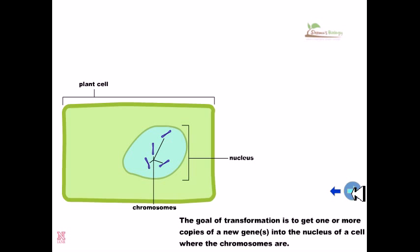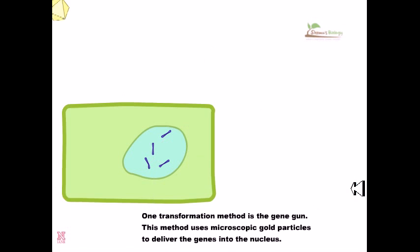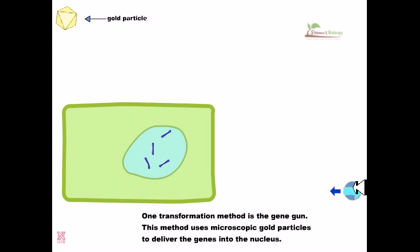The goal of transformation is to get one or more copies of a new gene into the nucleus of a cell where the chromosomes are present. One transformation method is the gene gun. This method uses microscopic gold particles to deliver the genes inside the nucleus.